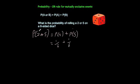Therefore, the probability of a 2 or a 5 equals 2 out of 6, and you can cancel that down to 1 third.